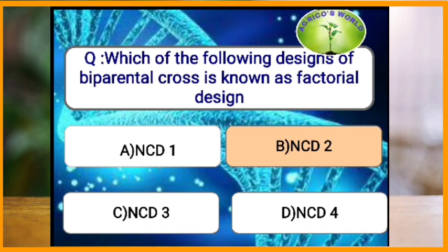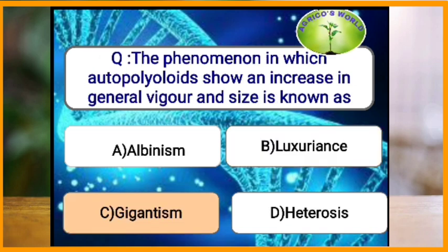The phenomenon in which autopolyploids show an increase in general vigor and size is known as what? The phenomenon where autopolyploids show an increase in general vigor and size is known as gigantism.